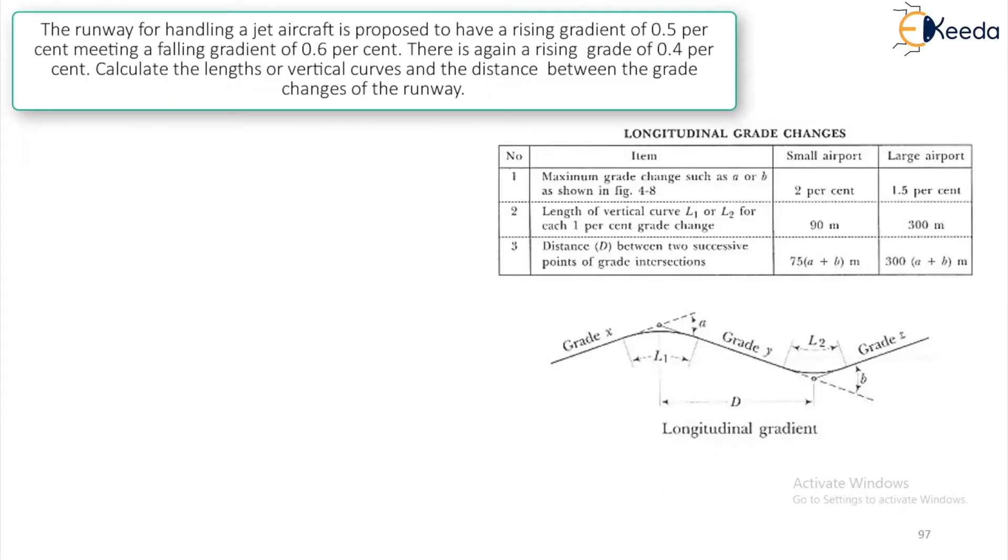To get started with the question given, the runway for handling a jet aircraft is proposed to have a rising gradient of 0.5% meeting a falling gradient of 0.6%. What is he telling? There is a rising gradient and then there is a falling gradient. We have in the previous lesson seen about the longitudinal grade change. This question matches this particular figure. There is a raising gradient of 0.5 and there is a falling gradient of 0.6. There is again a raising gradient of 0.4%.